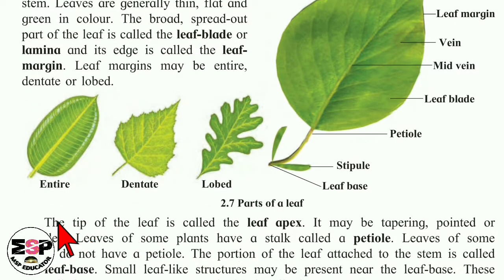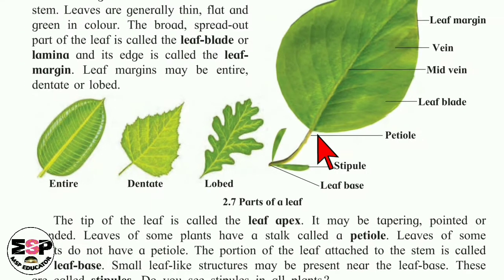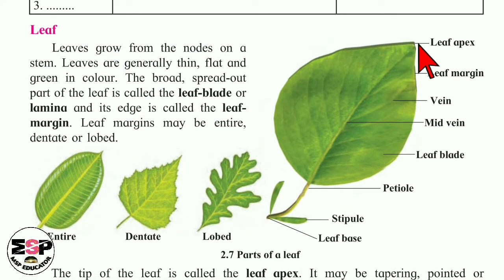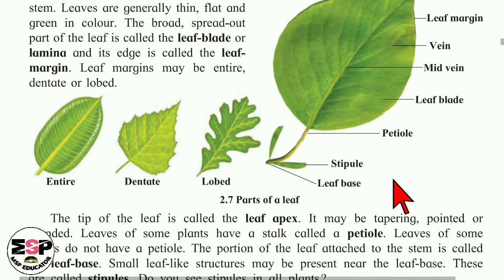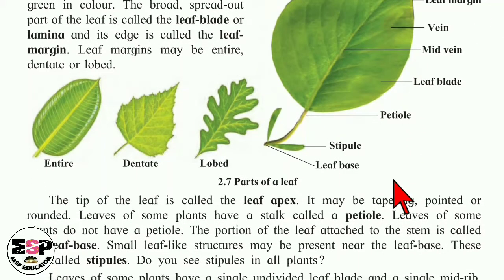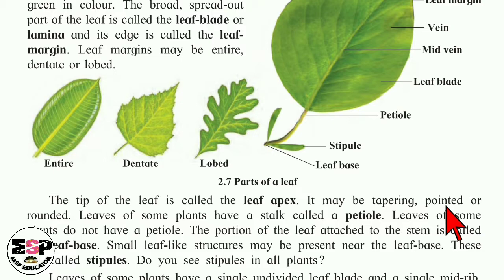Now, the tip of the leaf is called the leaf apex. Leaf ka jo tip hota hai — see here, this one is the tip of the leaf. It is called as leaf apex. It may be tapering, pointed or rounded.